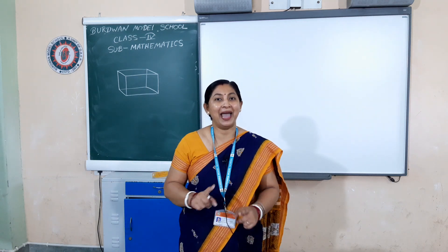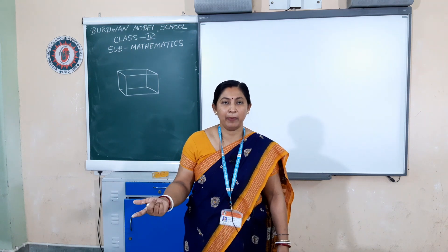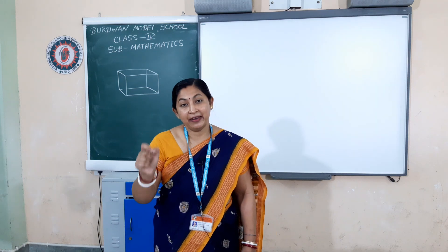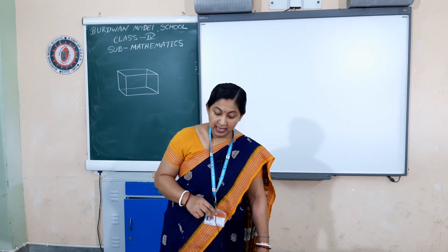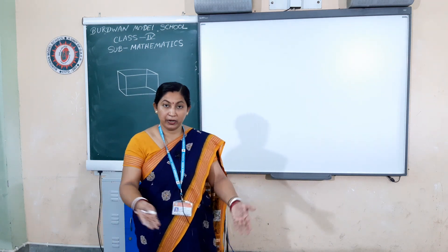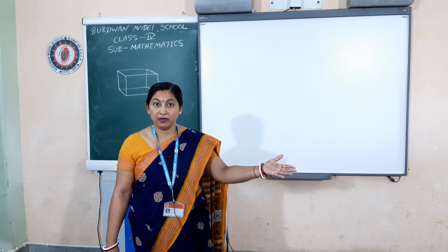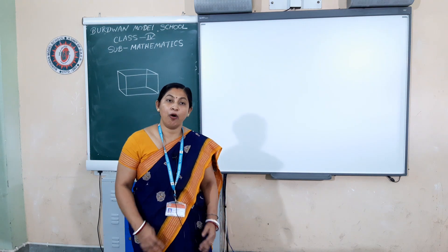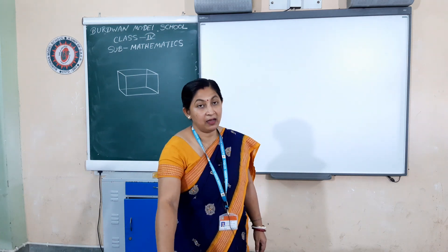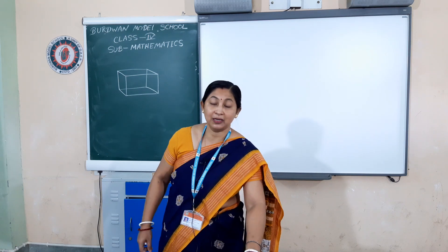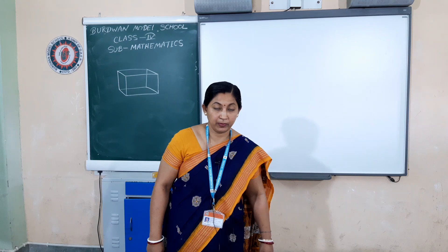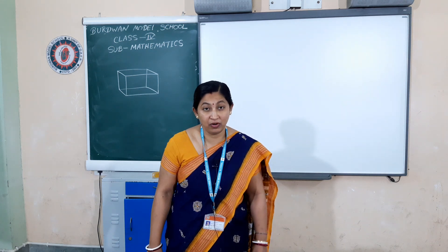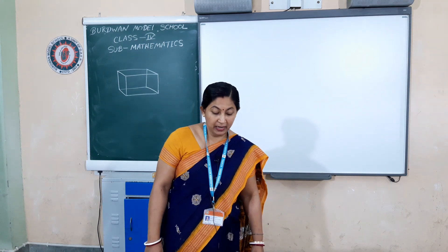For a cuboid, suppose you have all seen a matchbox — in every home we use a matchbox to light candles or diyas. So the matchbox is a very true example of a cuboid. Similarly, there are more examples: a book, an almirah in your home, and a wooden box — these are all examples of a cuboid. All these cuboids have six faces.